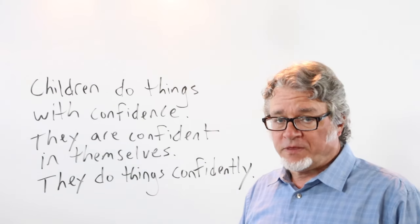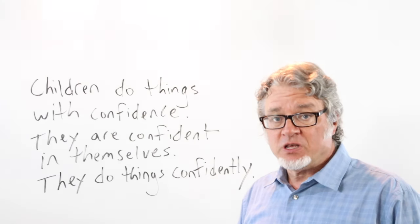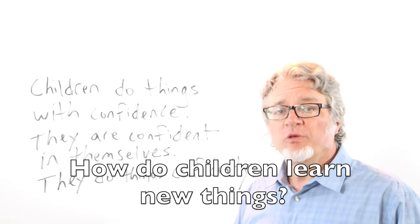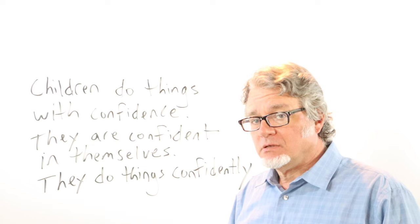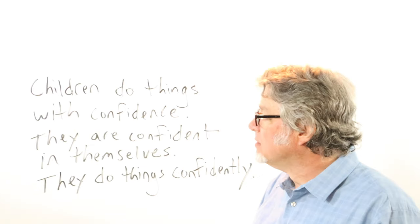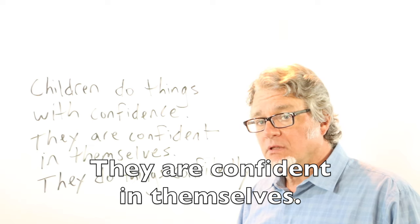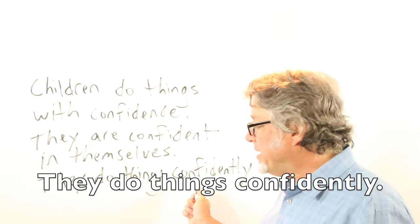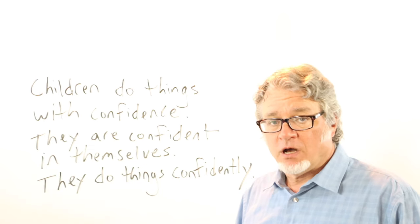We can all learn something from the way that children do things, because they're very good learners. How do children learn new things? Children do things with confidence. They don't worry about making mistakes. They are confident in themselves.